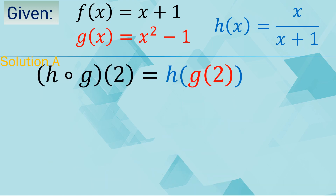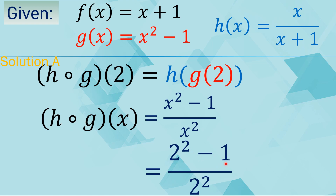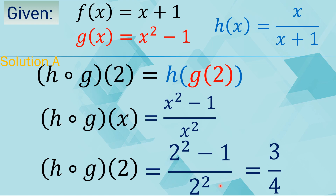Let us try to evaluate h of g of 2. We will use the new function we just formed, which is x squared minus 1 over x squared. Substituting x with 2, we have 2 squared minus 1 over 2 squared. 2 squared is 4, 4 minus 1 is 3, and that gives us 3 over 4. That is the value of h of g of 2.